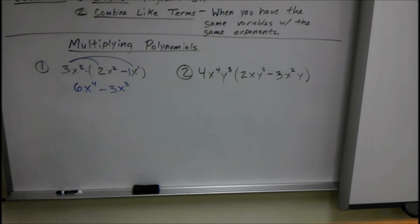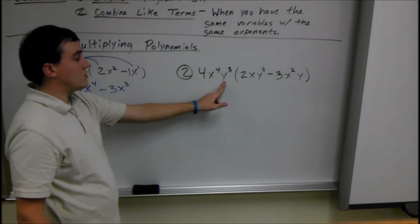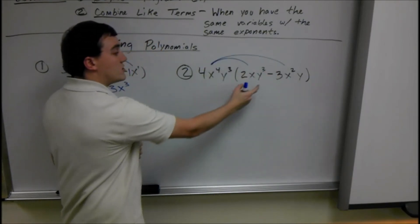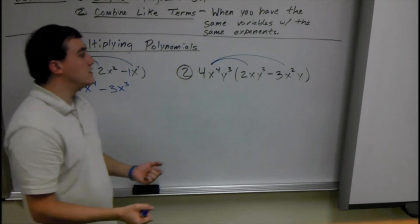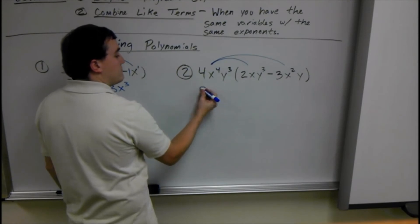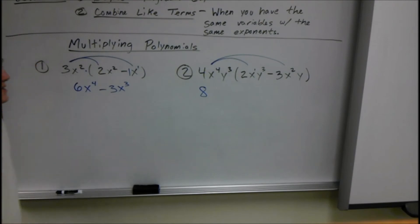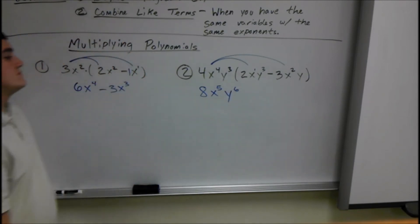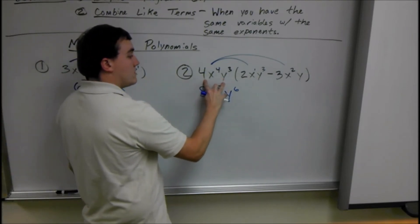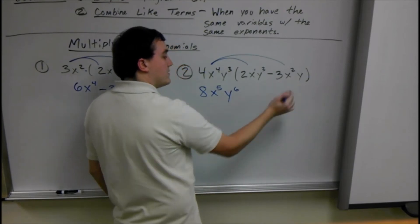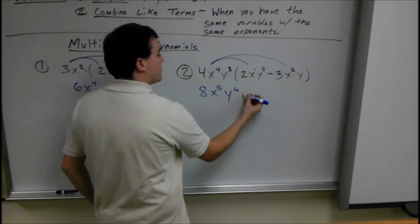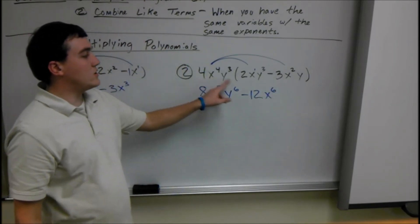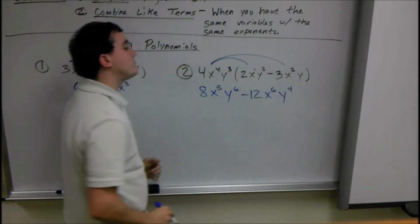Similar thing happening here. We have 4x to the fourth y cubed times a set of things in parentheses, and we're going to do the same thing — just distribute. There are only two terms. We have 4 times 2 is 8, x to the fourth times x to the first is x to the fifth, y cubed times y cubed is y to the sixth. Next term: 4x to the fourth y cubed times negative 3x squared y. 4 times negative 3 is negative 12, x to the fourth times x squared is x to the sixth, and y cubed times y is y to the fourth.